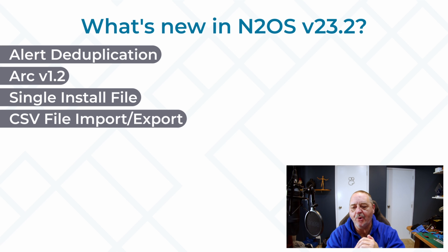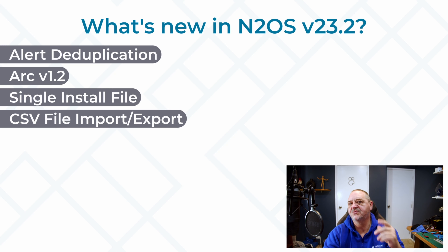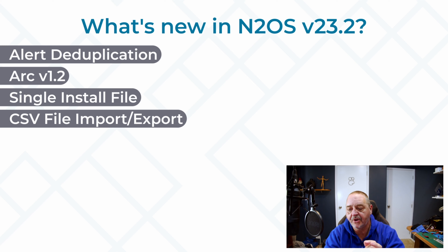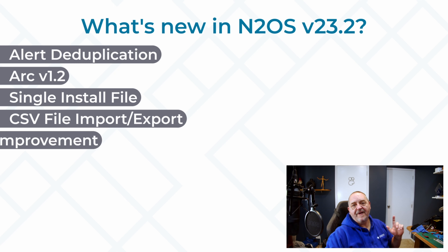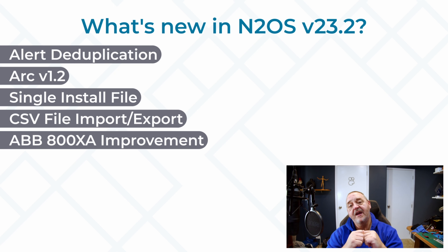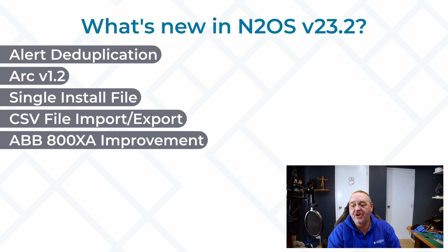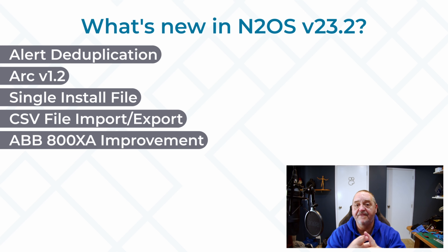We have improved import and export functionality around CSV files — we shouldn't even call it CSV anymore because you're no longer limited to commas as a separator. You can separate on semicolons, tabs, hashes, and a lot of other things. There's even the ability to import data from a lot of other products directly into the Guardian, which is really cool. For users of ABB's 800xA systems, we have improved our support for protocols around that — did you know that ABB holds the largest share in the global DCS market? We've improved asset identification and traffic inspection around ABB 800xA pro.